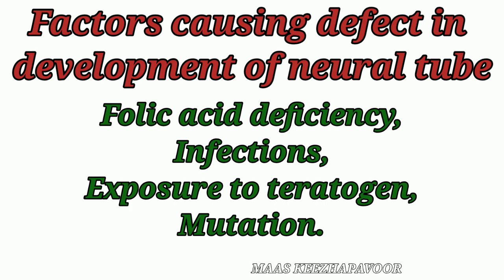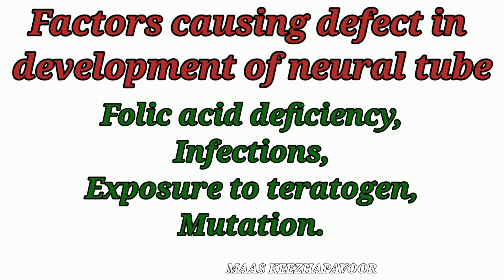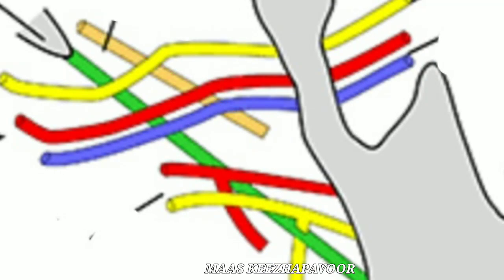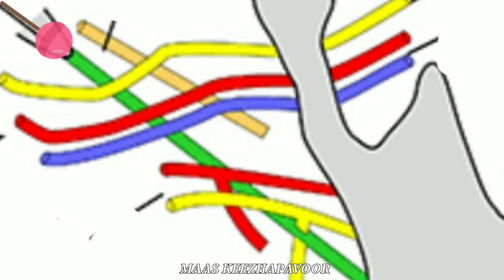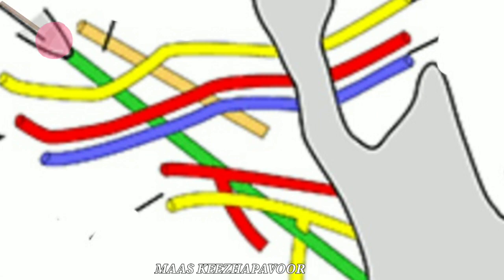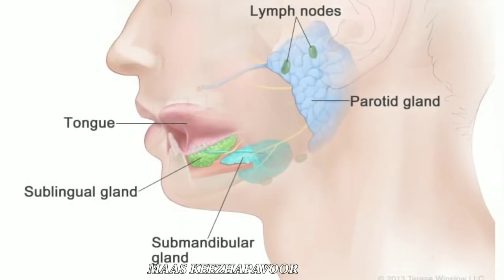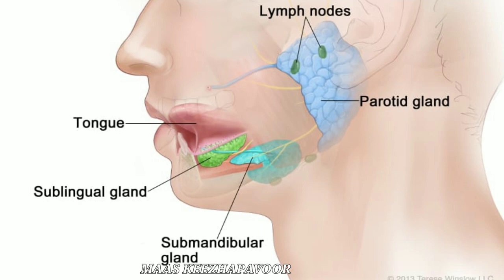Folic acid deficiency, infections, exposure to teratogens, and mutations during the early embryonic period can lead to defects in the development of the neural tube. The chorda tympani and auriculotemporal nerve are related medial and lateral to the spine of the sphenoid respectively. Therefore, any injury to the spine may involve both these nerves with loss of secretion from all these salivary glands.